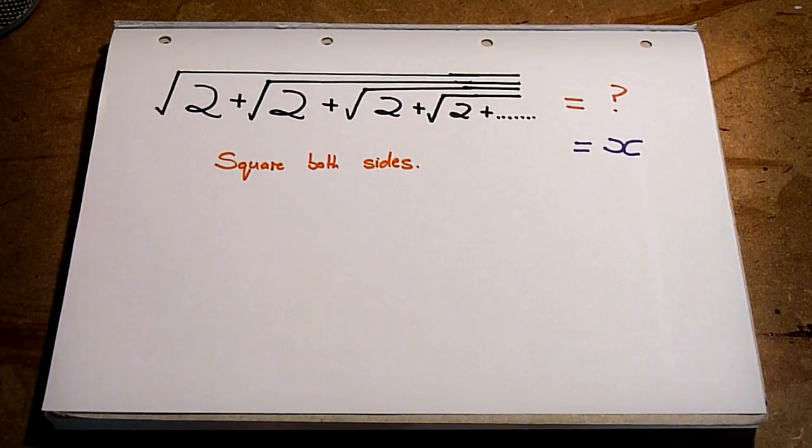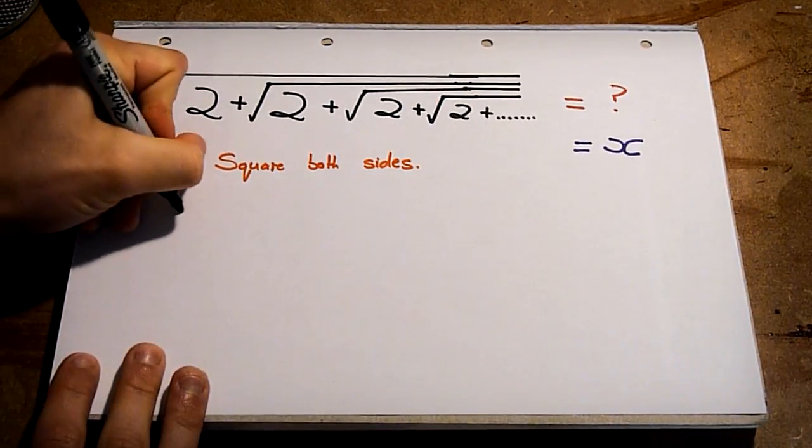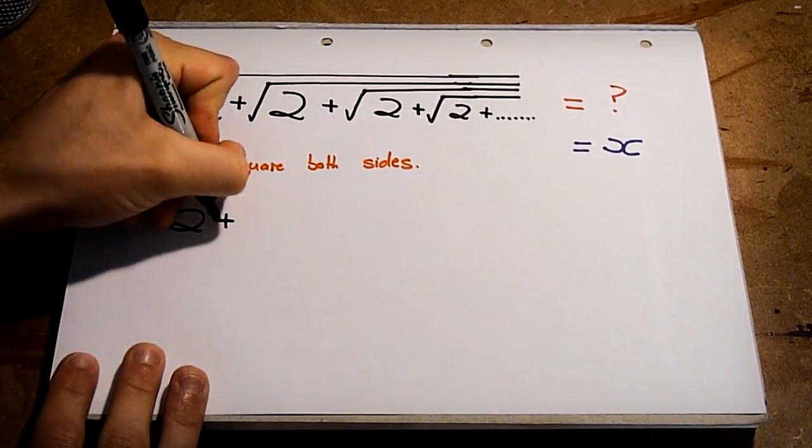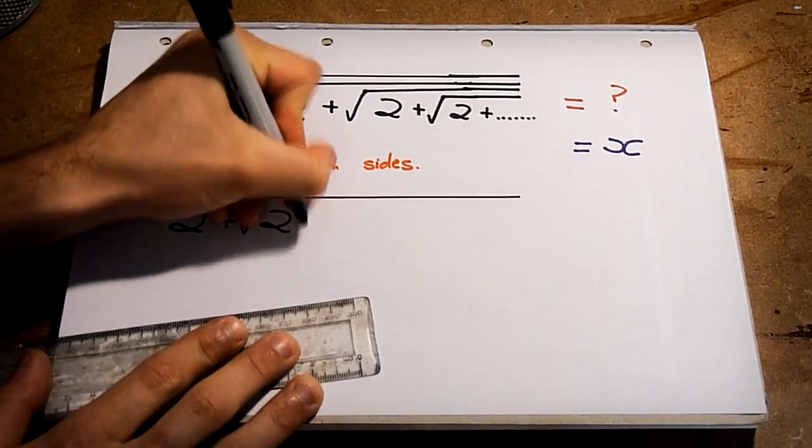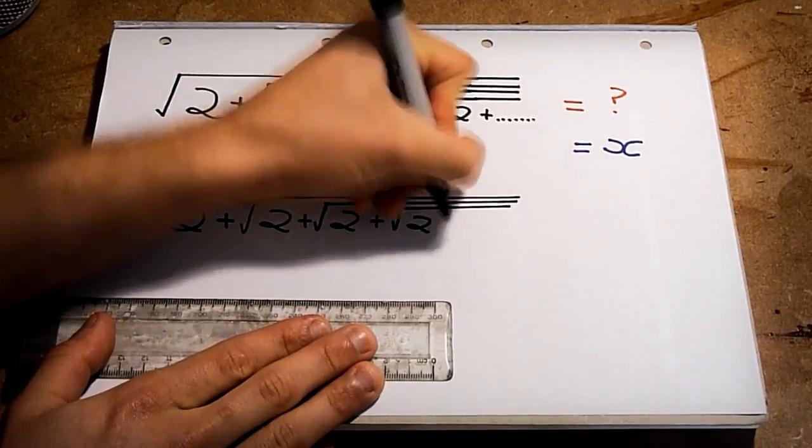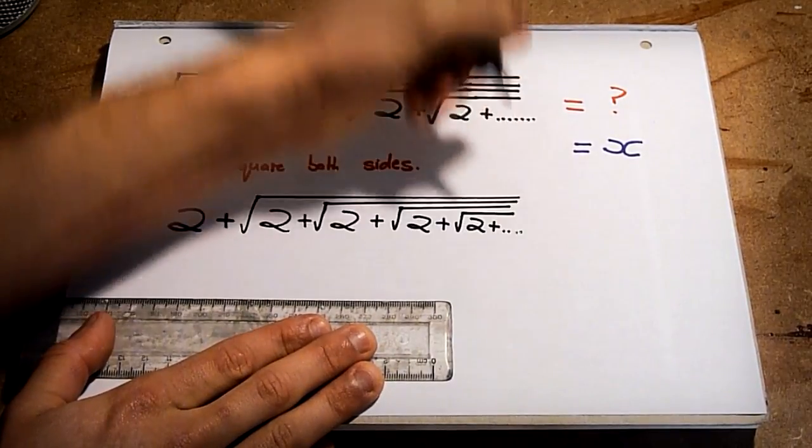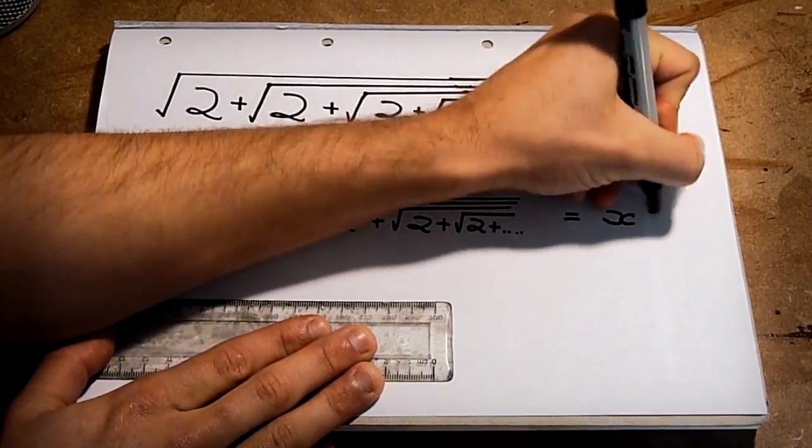Notice that the left-hand side is all under one square root. And so when squared, we just end up with 2 plus the square root of 2 plus the square root of 2 and so on. The right-hand side is simply x squared.